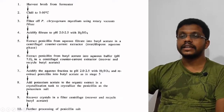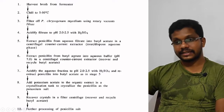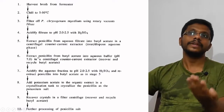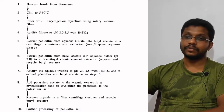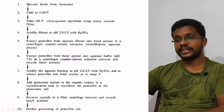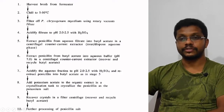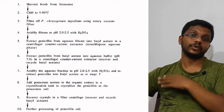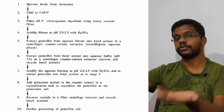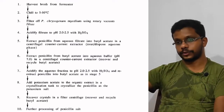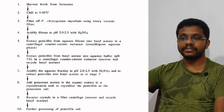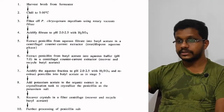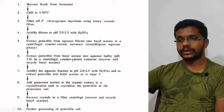In the next step, the butyl acetate phase is re-extracted. Penicillin is soluble in butyl acetate because of the low pH, so in the next step, we extract it into an aqueous buffer at pH 7. When the pH is increased to 7, penicillin is no longer miscible in butyl acetate — it becomes miscible in the aqueous solution. Using a counter-current extractor, the penicillin from butyl acetate is extracted into the aqueous buffer.